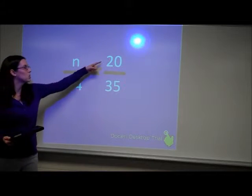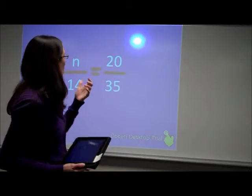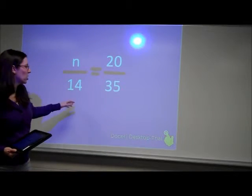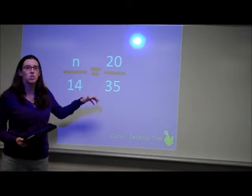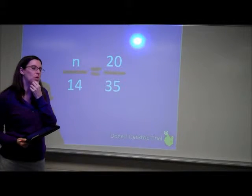So this one we're going to do together. We have n over 14 is equal to 20 over 35. So first of all, looking at this, it would be a little bit difficult to use mental math with this. So we need to use another way. I want you to think, how are we going to do this?